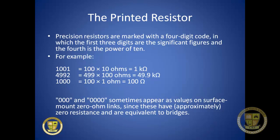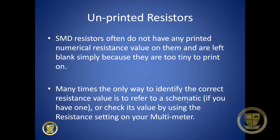Precision resistors usually have a four-digit code where the first three digits are significant figures and the fourth is the power of ten. Also important to note: when you see triple zero or quadruple zero values, these are zero-ohm resistors, which are basically just links. Manufacturers use these so they can share logic board designs between more than one device, soldering a zero-ohm resistor to the surface instead of redesigning the whole logic board.